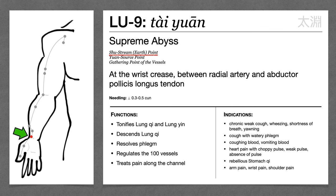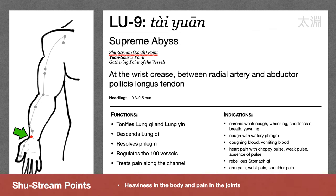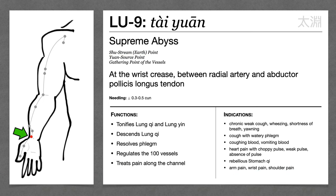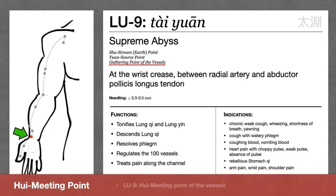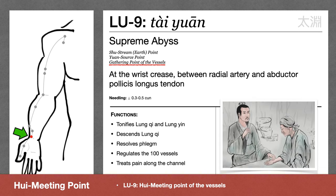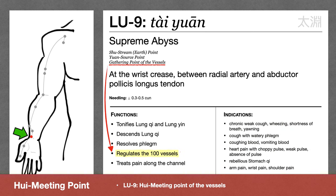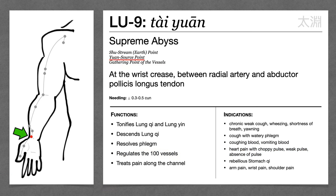Lung 9 is also the Shu stream point — Shu stream points treat body heaviness and pain in the joints, so Lung 9 treats joint pain. Lung 9 is also one of the eight gathering points, specifically the meeting point of the vessels, which makes sense because this is where we take the pulse during pulse diagnosis. So Lung 9 can treat disorders of the blood, like coughing blood and vomiting blood, and disorders of the vessels, like heart pain with choppy pulse, weak pulse, or absence of pulse. Lung 9 is also the earth point on the metal channel, making it the tonification point. For Lung 9, remember: tonifies lung qi and lung yin.